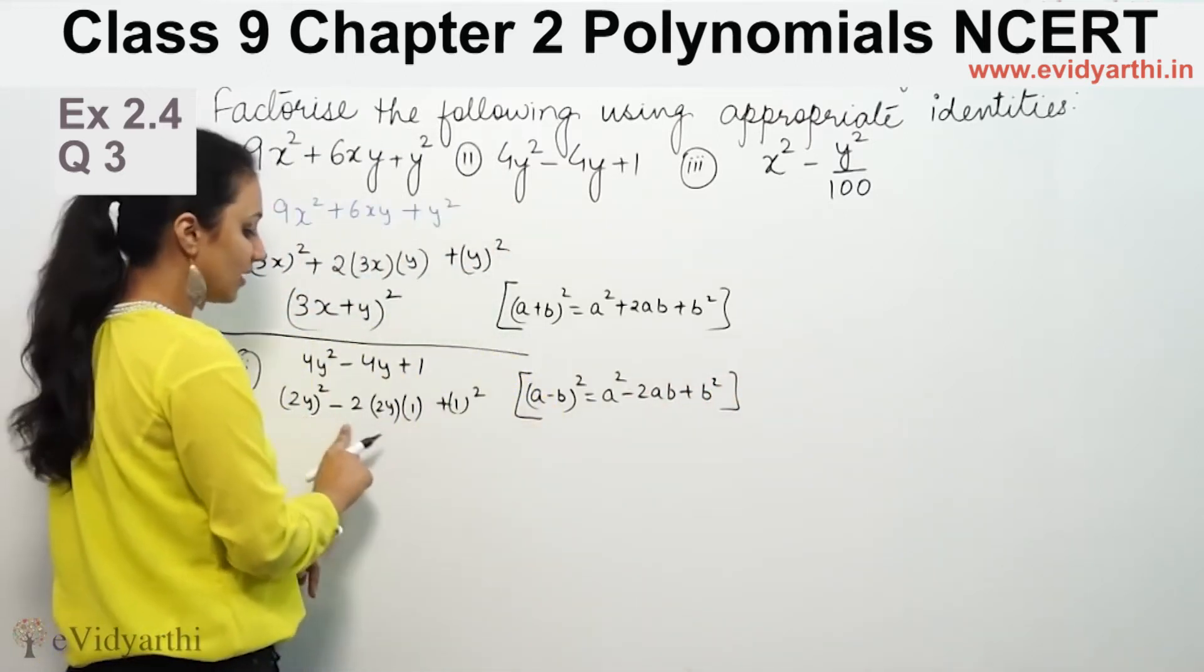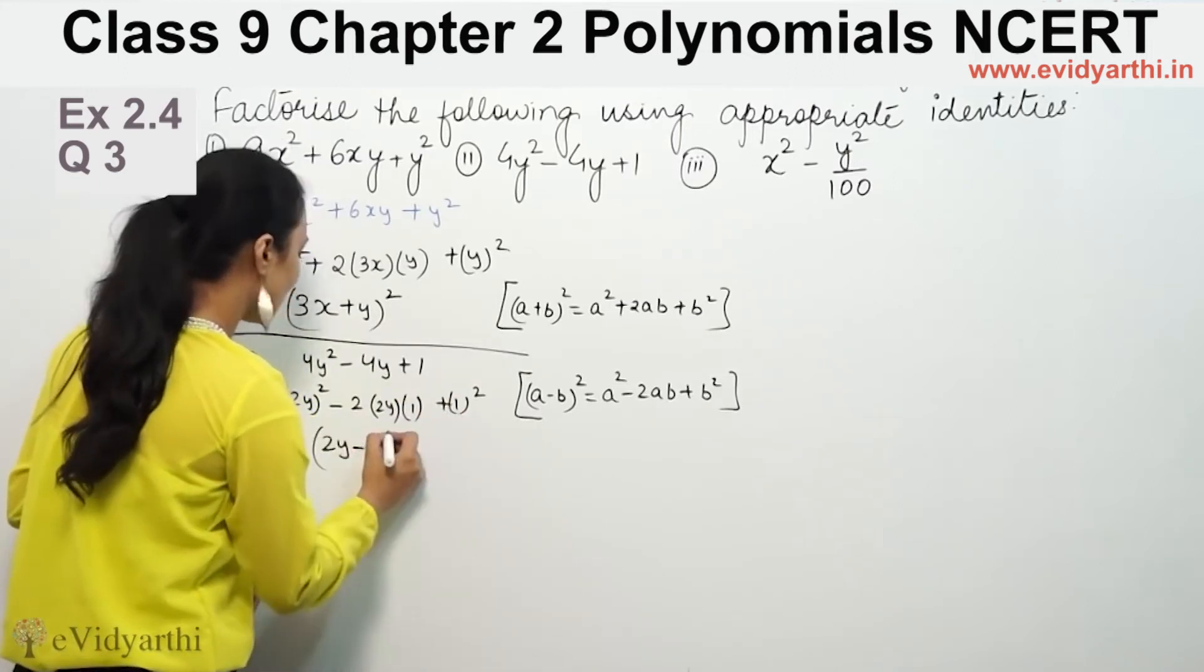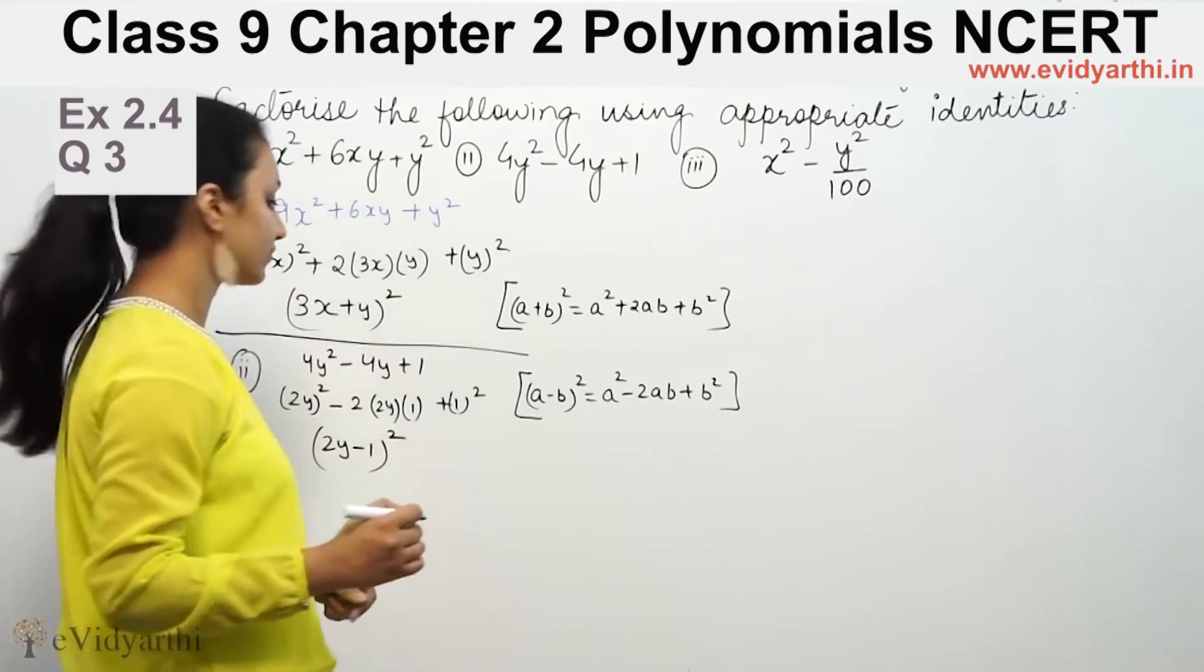Identity here, we have (a-b)² = a² - 2ab + b². If we equate this example, a² - 2ab + b². That means this is (2y-1)².